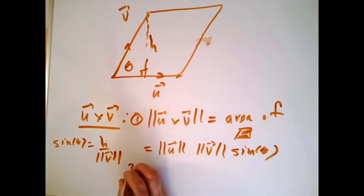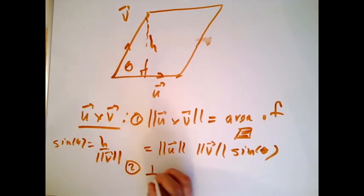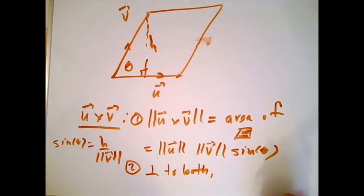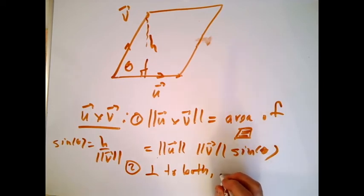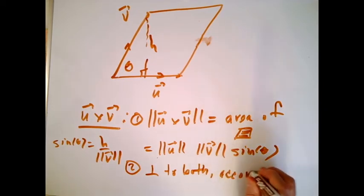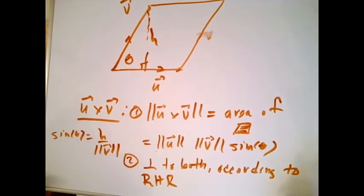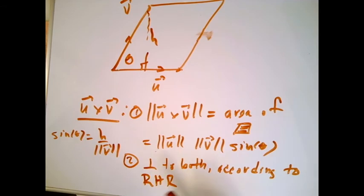Secondly, the cross product has to be perpendicular — that's the direction — perpendicular to both u and v. The problem is perpendicular could stick up or stick down, and we have to have just one. So what they invented is called the right-hand rule. The length of u cross v equals the area of the parallelogram, which is length of u times length of v times sine theta, and the direction is perpendicular to both according to the right-hand rule.